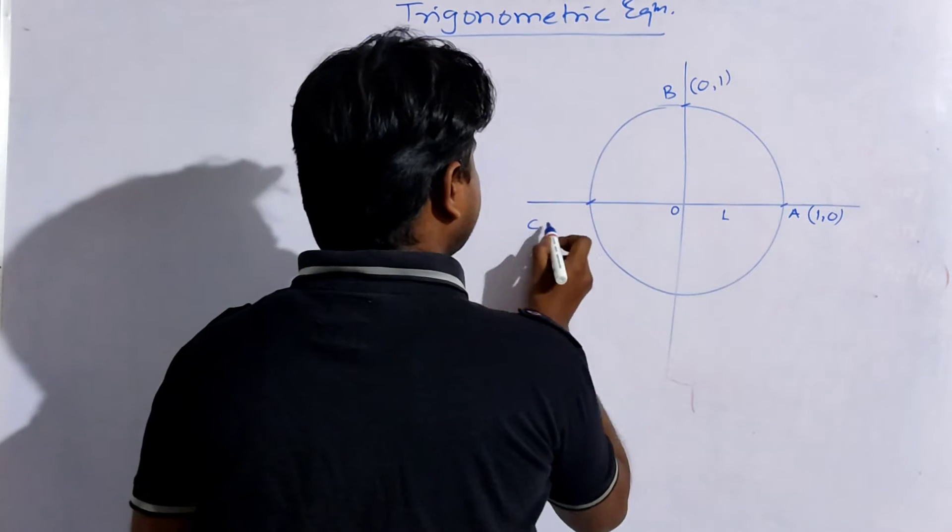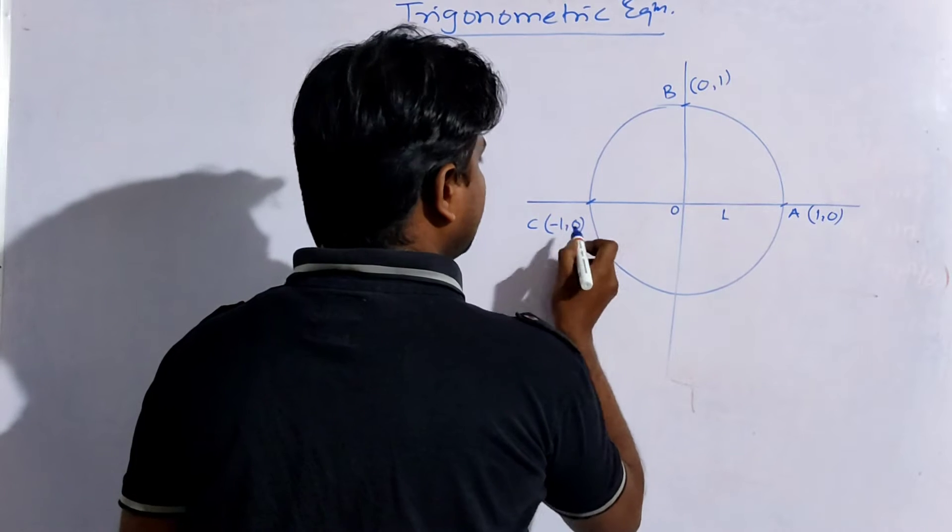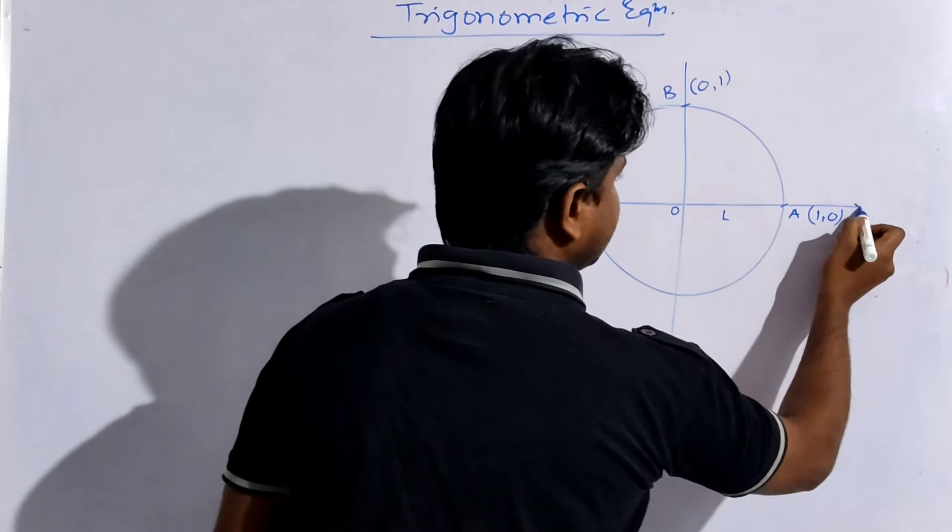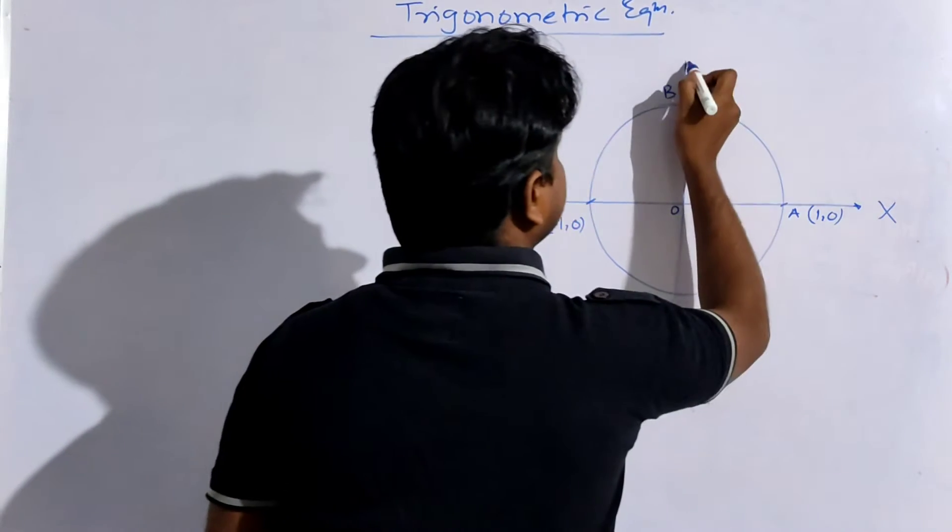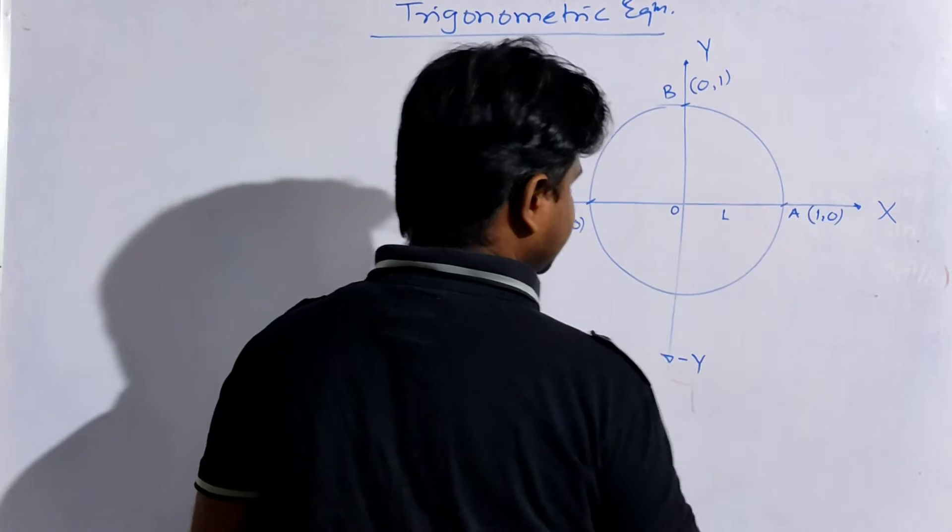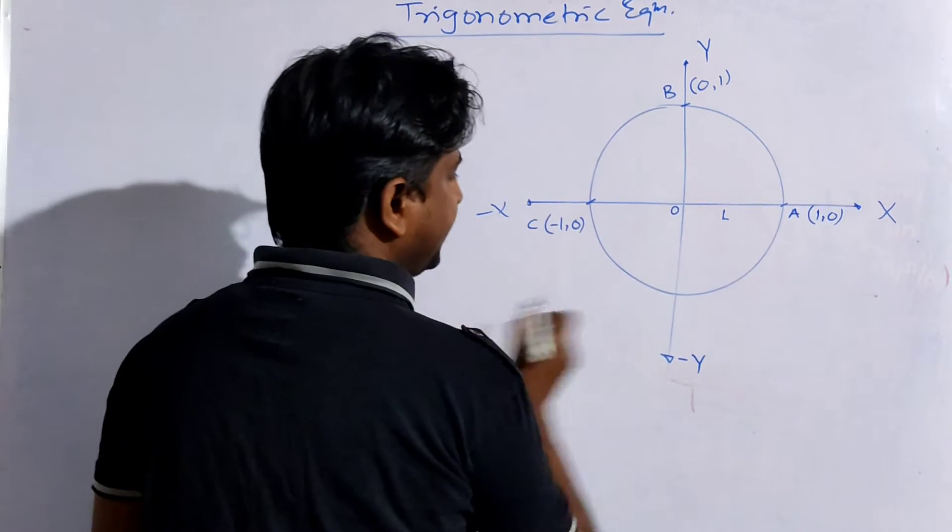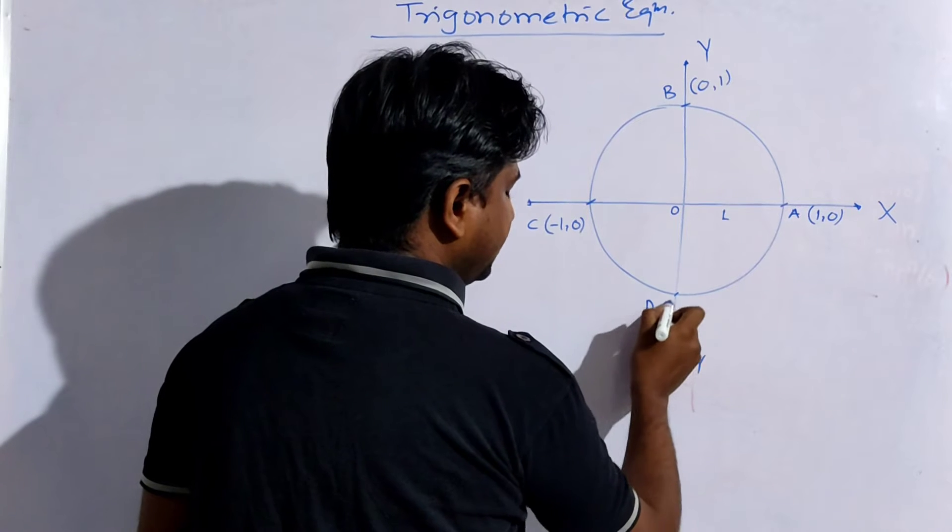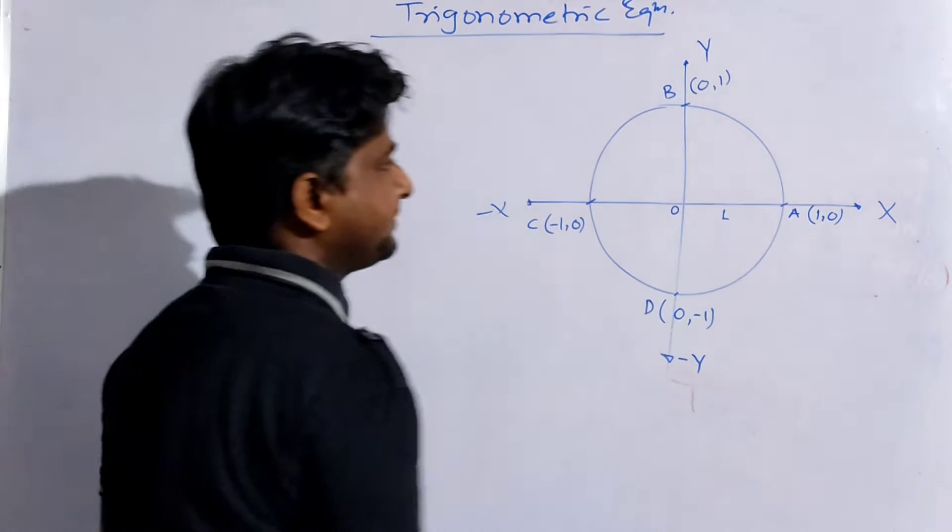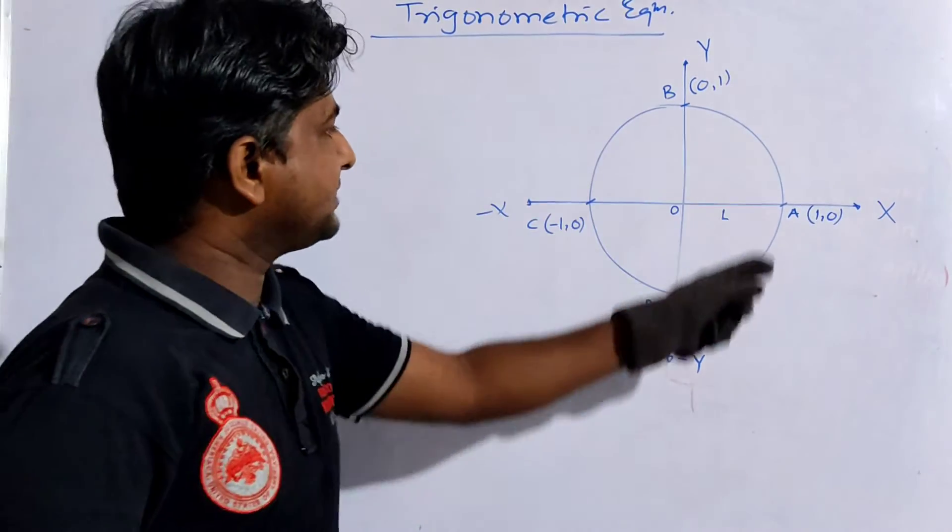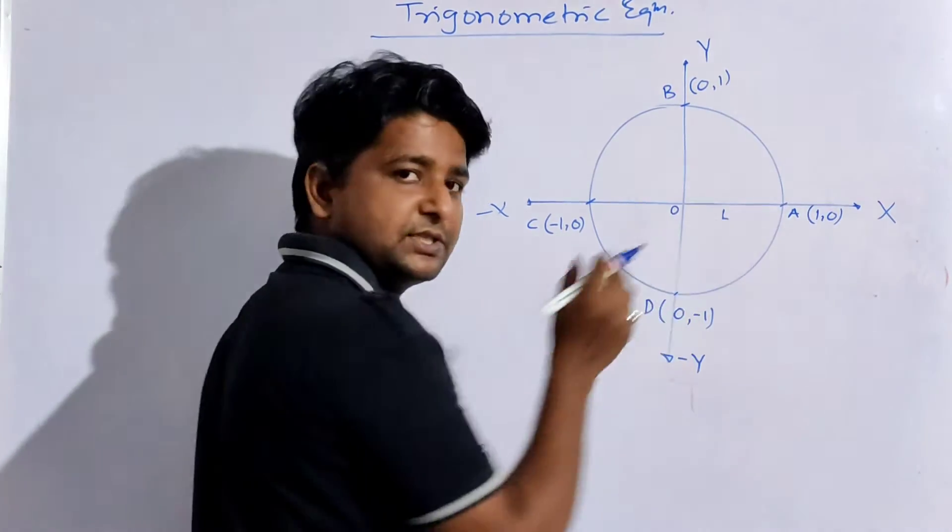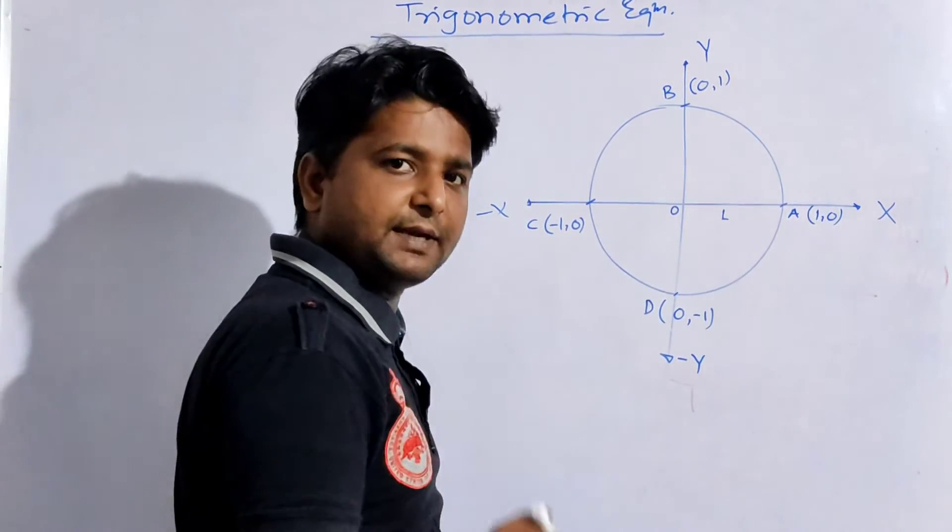This point C has coordinates (-1,0), 1 unit but on the negative x-axis. This is the negative x-axis, this is the positive x-axis. Then this is obviously the positive y-axis and this is the negative y-axis. So this is (-1,0) and this point will have coordinate (0,-1). This is called a unit circle - a circle with radius equals to 1 unit.